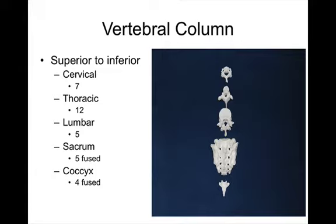The vertebral column is your backbone in common everyday language. From superior to inferior, we have seven cervical vertebrae in the neck, then 12 thoracic vertebrae of the middle back, then five lumbar vertebrae of the lower back. Next is the sacrum — five fused bones located medial to the pelvis. And then we have the coccygeal vertebrae, four fused vertebrae commonly known as the tailbone.